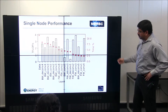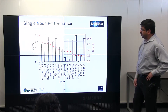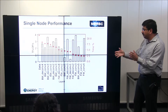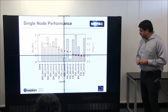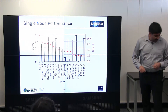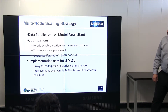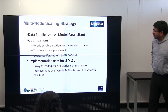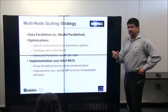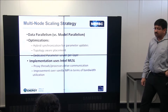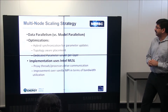The red stars represent the amount of time spent in different layers — you don't spend equal time in each layer. On a single-node level, performance is fairly good. But the real challenge now is how to use all 9,600 nodes, having already extracted what we can from a single CPU.